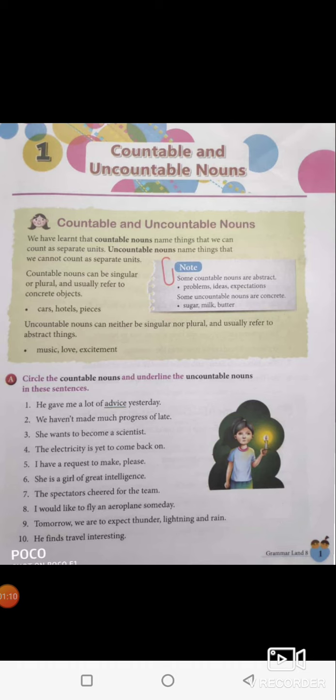Countable nouns name things that we can count as separate units. Uncountable nouns name things that cannot be counted as separate units. Note this: some countable nouns are abstract, like problems, ideas, expectations and so on. Some uncountable nouns are concrete, like sugar, milk, rice, butter and so on.